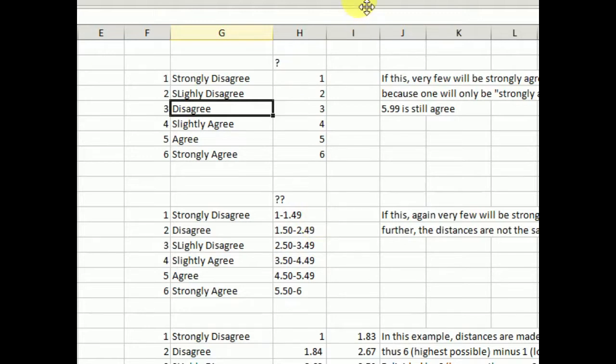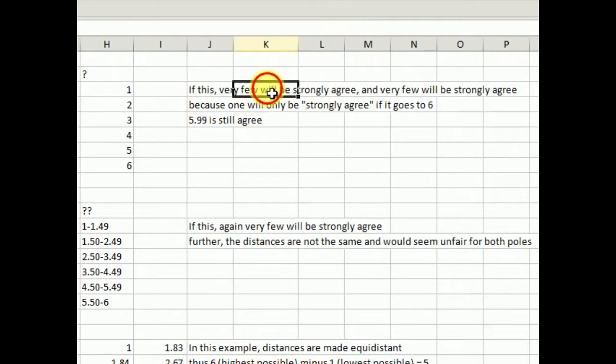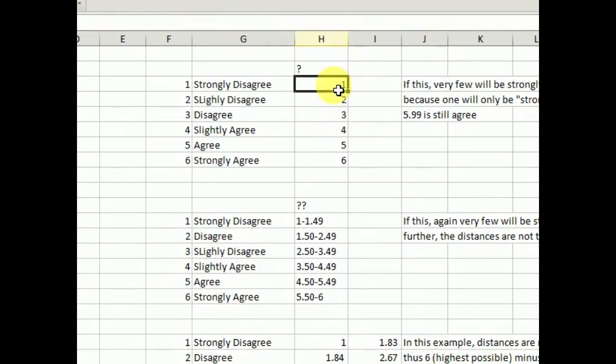Now, if this will be used, as I said here, very few will strongly agree and very few will be strongly disagree. And the reason is, if you notice, you have to only have 1 in order to be strongly agree, and you only get strongly disagree if you get 1. If you get 6, then you'll get strongly agree. The only way that you can get 6 perfectly is that everybody scored 6. If everybody scored 1, then they'll strongly disagree. Then most of the scores will just vary between slightly disagree, disagree, slightly agree, and agree. So that's not, you know, in the terms of mathematics, that's not fair.